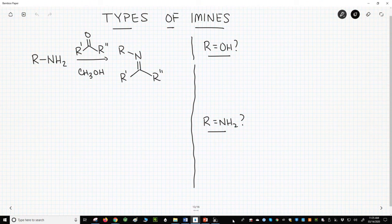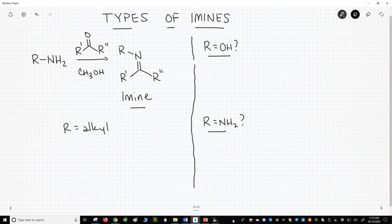In the upper left is a standard imine forming reaction. When people make imines, the R group on nitrogen is normally an alkyl group.